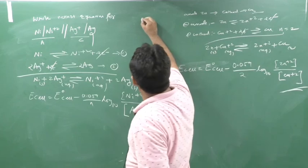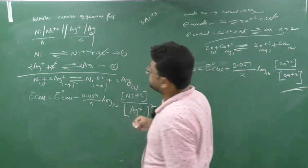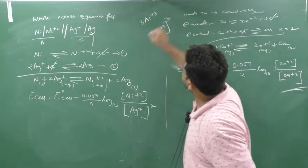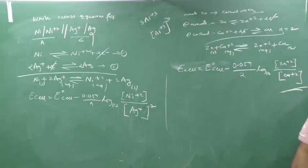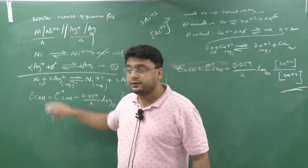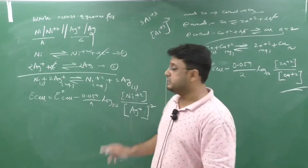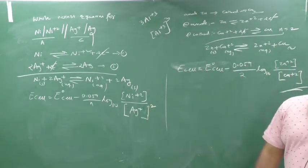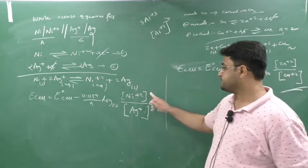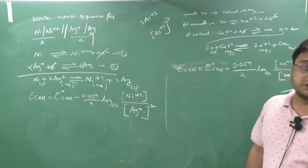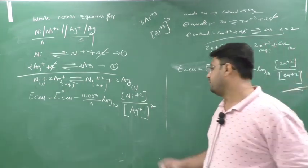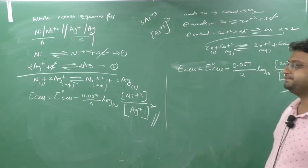Remember this rule: if the number of moles appears before an ion in the reaction, that number goes as a power on the concentration in the Nernst equation. For example, if you have 3Al³⁺, then the concentration term is [Al³⁺]³. This is the same rule applied in equilibrium constant expressions — product over reactant with stoichiometric coefficients as powers. Most students forget this, so please remember it carefully.